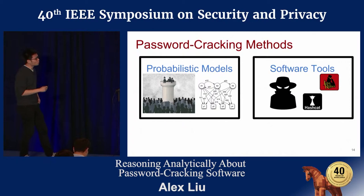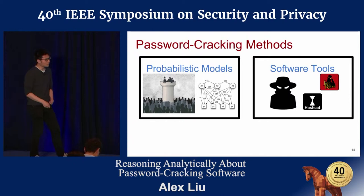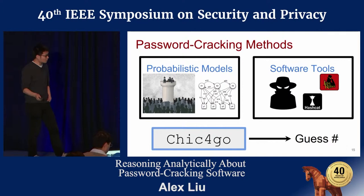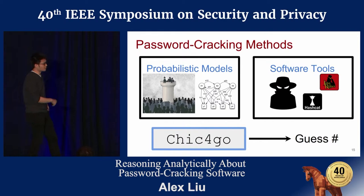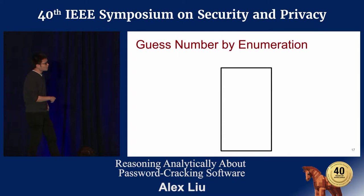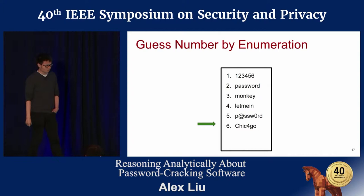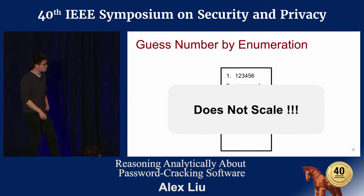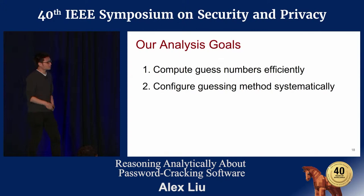There are two worlds of password-cracking methods. On one side are the probabilistic models that researchers use. On the other side are software tools like John the Ripper and Hashcat, used by InfoSec professionals and real-world hackers. The community already knows how to compute the guess number for the probabilistic models, so this work focuses on getting the guess number for the software tools. The naive way is to run the algorithm, generate guesses, and stop when the target appears — but this doesn't scale to quadrillion or 10^20 guesses.